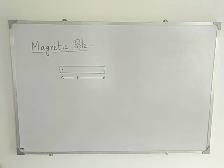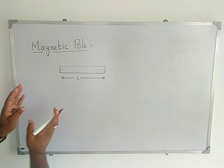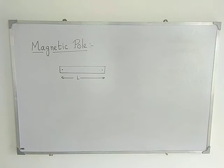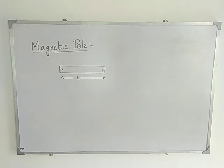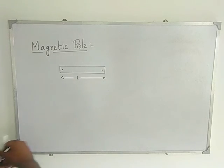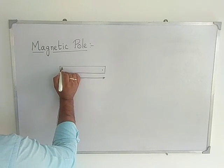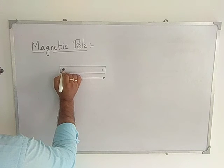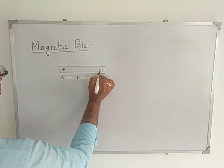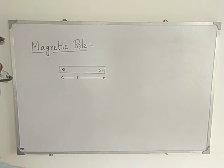Due to the directive property of the magnet, if you hold the bar magnet by a string in air freely, it will align itself along the north and south directions. From that idea, one end is denoted as the north pole and the other as the south pole. So these are the two magnetic poles of the bar magnet.